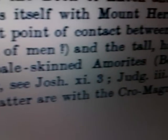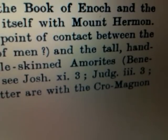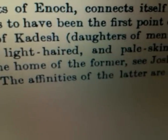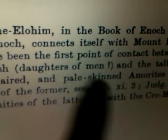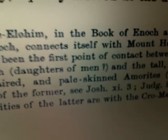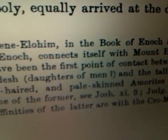It says, for the home of the former, see Joshua XI:3 and Judges I, II, and 3. Then something interesting — 2 Samuel XXIV:7. It says the affinities of the latter are with the Cro-Magnon race of France. Remember our chart talking about who the Canaanites are and who their descendants are today. This idea of pale-skinned Amorites was interesting to us, seeing that some of the evidence is findable out there.